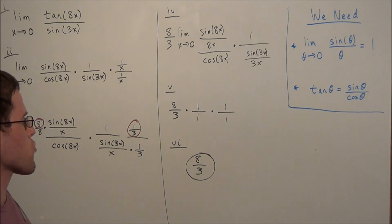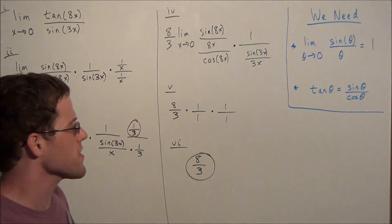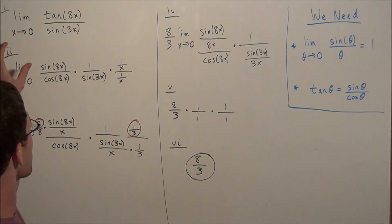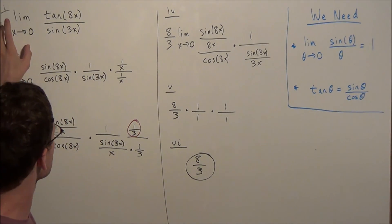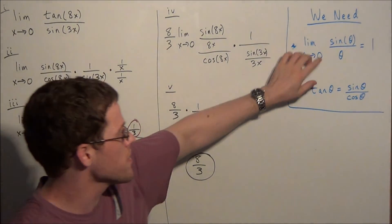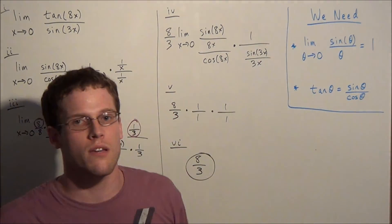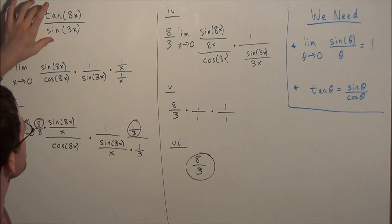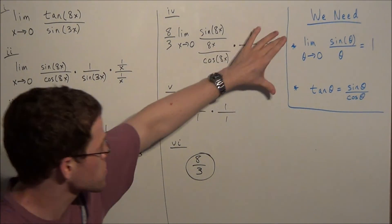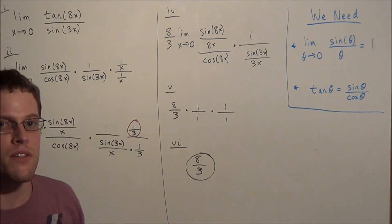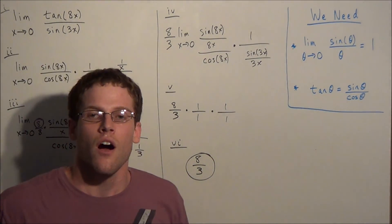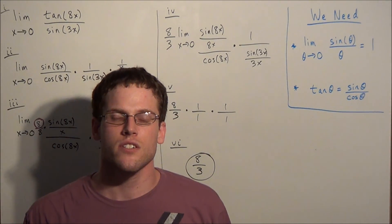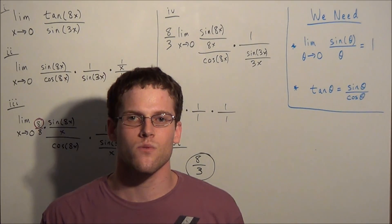To wrap things up: we want to make use of trigonometric identities when finding limits of trigonometric functions, and the limit of sine theta over theta as theta approaches 0 is one of the most important limits to remember for problems of this type. This concludes the video on finding limits of trigonometric functions. Thank you all for watching, and I hope this was helpful.